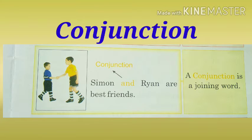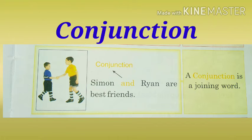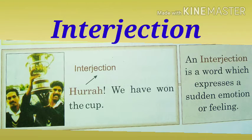Now the next one is conjunction. What is it? Conjunction — it is a joining word. When we want to join two sentences, or in a sentence we want to join two students' names or two things' names, that time we use the word that is called a conjunction. For example: Simon and Ryan are best friends. Here, 'and' is a conjunction, shown by the arrow in the picture. A conjunction is a joining word — the word which is used to join sentences or words is called a conjunction.